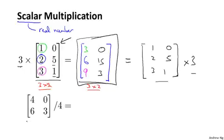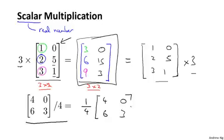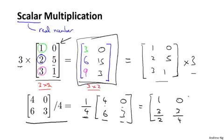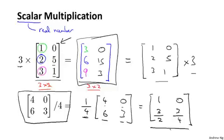You can also take a matrix and divide it by a number. So it turns out taking this matrix and dividing it by 4, this is actually the same as taking the number 1 quarter and multiplying it by this matrix 4, 0, 6, 3. And so you can figure the answer. The result of this product is 1 quarter times 4 is 1, 1 quarter times 6 is 3 halves. That 6 over 4 is 3 halves. And 1 quarter times 3 is 3 quarters. And so that's the result of computing this matrix divided by 4.